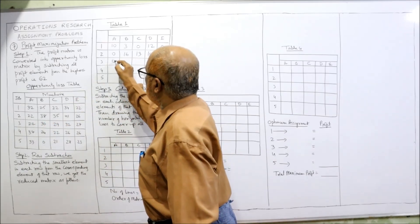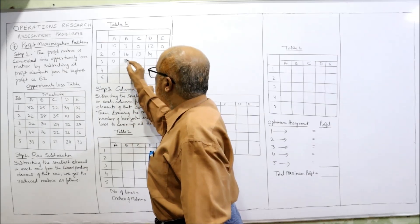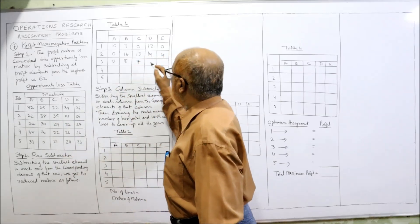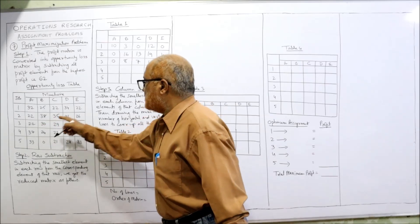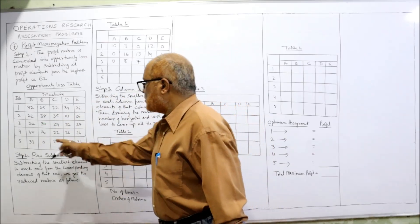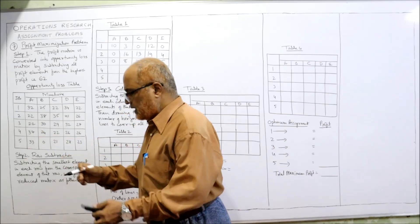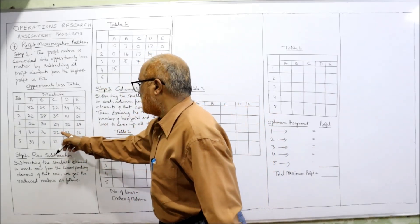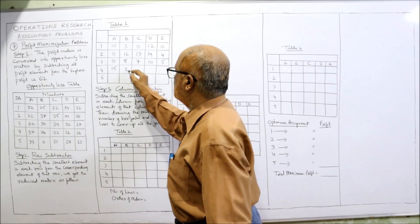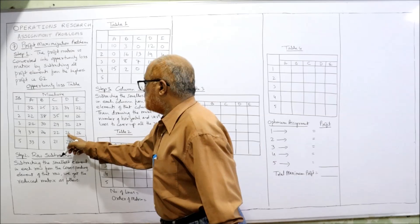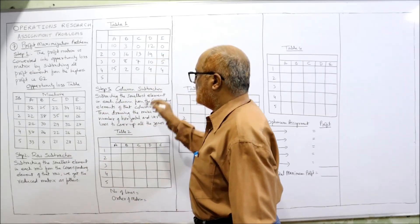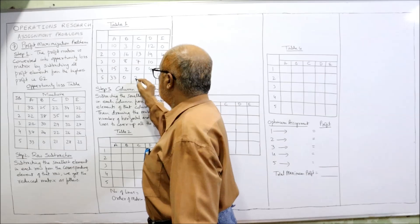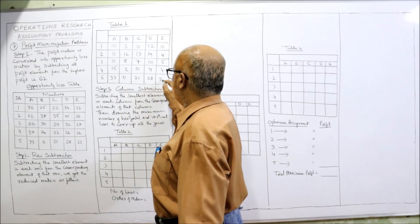Third row minimum is 22: 22 minus 22 is 0, 30 minus 22 is 8, 29 minus 22 is 7, 32 minus 22 is 10, 27 minus 22 is 5. Fourth row minimum is 22: 37 minus 22 is 15, 24 minus 22 is 2, 26 minus 22 is 4, 26 minus 22 is 4. Last row minimum is 0, so same values remain. Row subtraction is completed.